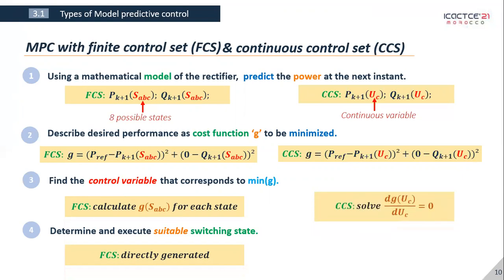For CCS, since it's a continuous time model, we must find the converter voltage that makes its derivative go to zero. Once we find this converter voltage, we use a space vector pulse width modulation to generate the switching signal.